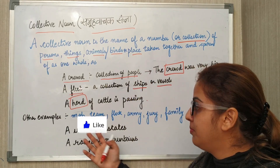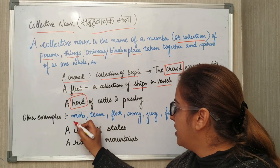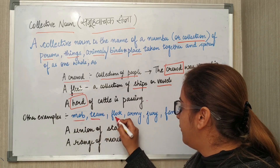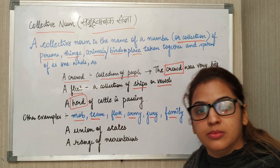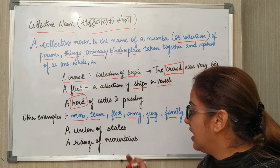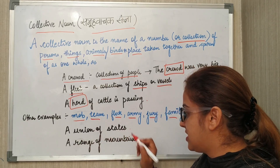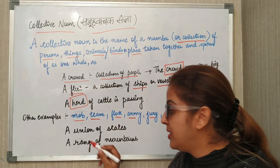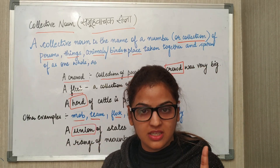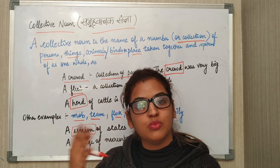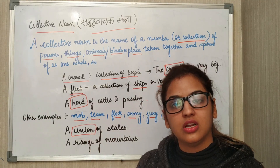Next, if I give you plenty of words — there are many words like: mob, team, flock, army, jury, family, and many more. One other example is a union of states. Now union is not one; it is always more than one. That's the reason union is your collective noun.